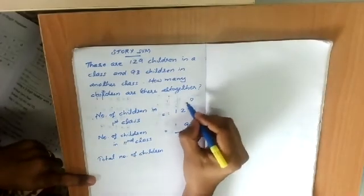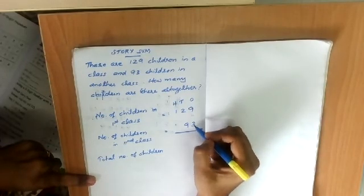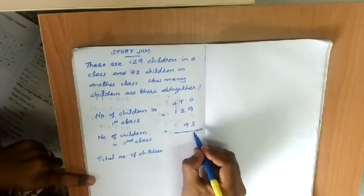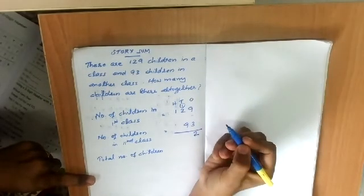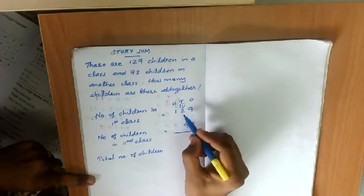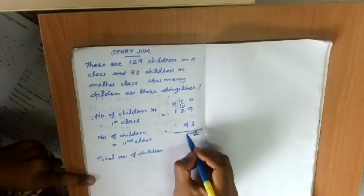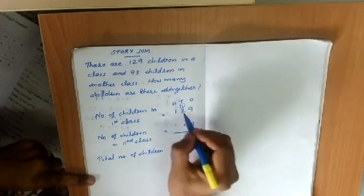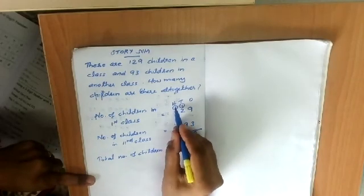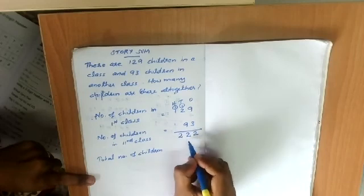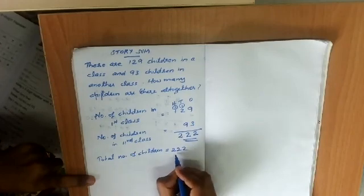We set up ones, tens and hundreds. In the ones place there are 9 and 3: 9 plus 3 equals 12, so we write 2 in the ones place and carry 1. In the tens place there are 1 (carried), 2, and 9: 9 plus 1 is 10, plus 2 is 12, so we write 2 in the tens place and carry 1. In the hundreds place: 1 plus 1 equals 2. So there are 222 children in total.